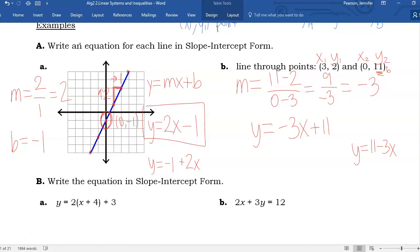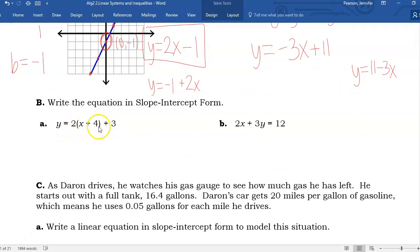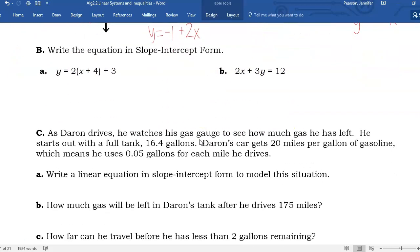Next example, write in slope-intercept form. So I have an example that is in point-slope form and an example in standard form. We're going to convert both of these into mx plus b. First of all, I'm going to distribute to get rid of those parentheses. Then I will combine some like terms. When I distribute 2 times x from 2x plus 2 times 4, we have to multiply the number by everything inside. So 8 plus 3 is 11. And that's it. So we distribute to get rid of the parentheses and combine like terms. My slope was 2, still 2. My intercept is 11.